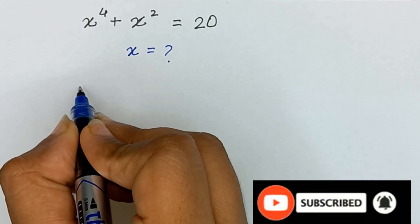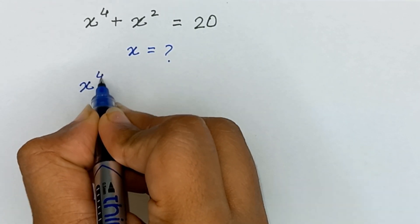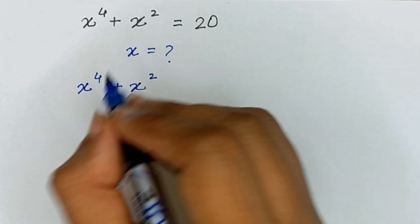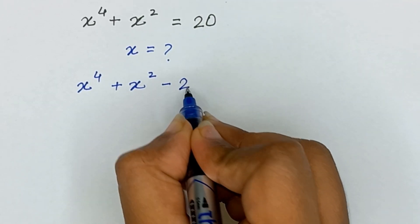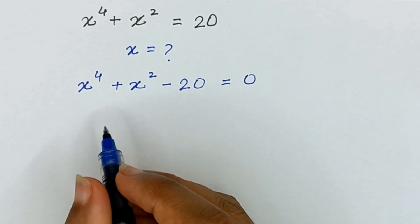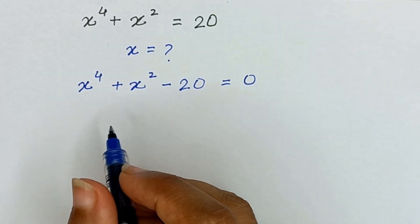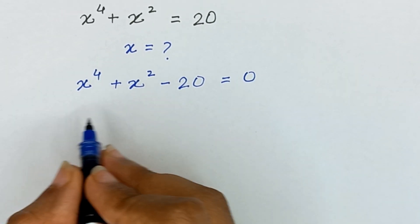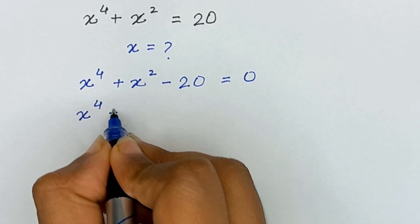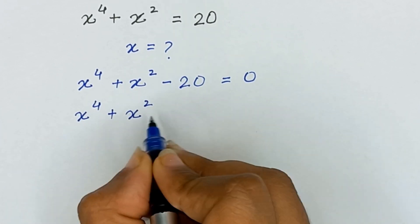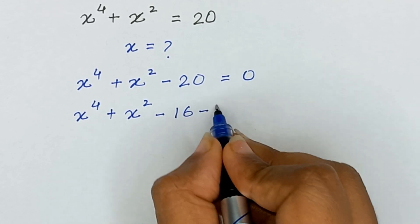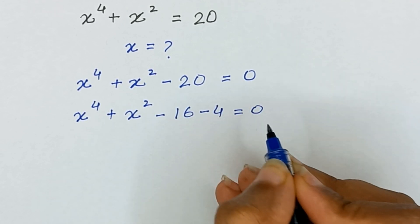We can write the above equation as x raised to the power 4 plus x squared, and we will take 20 to the left hand side, so it will become minus 20 and it is equal to 0. We can also write the 20 as minus 16 and minus 4.